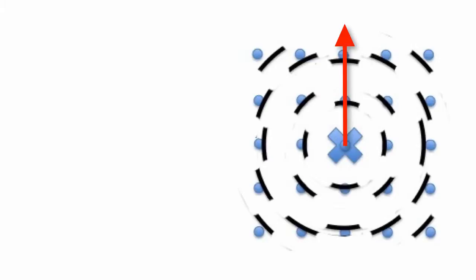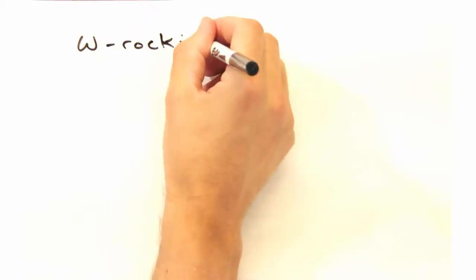Sounds like we need a scan that looks at the short arcs in reciprocal space. Yeah, that's exactly right. And for that we have the omega rocking curve.